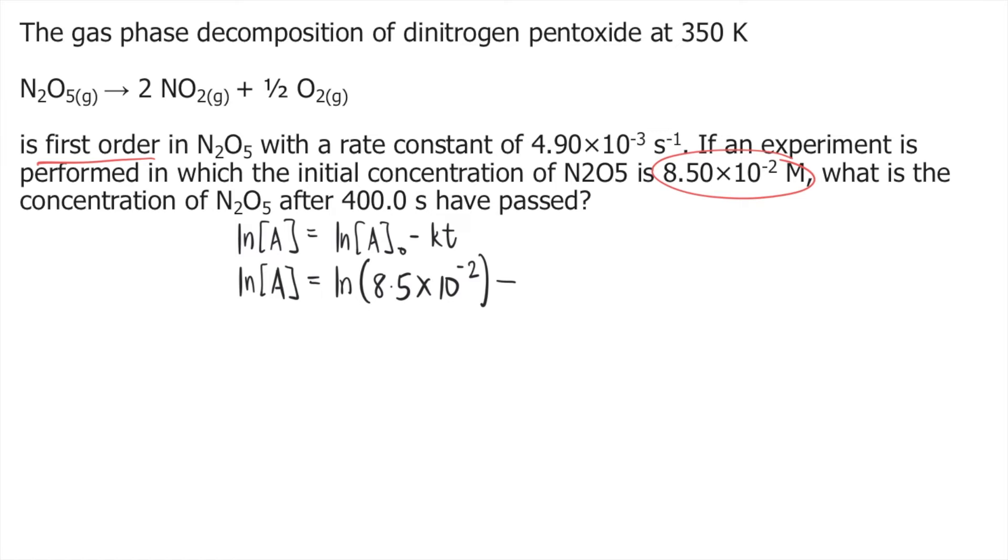Minus k is the rate constant, and we are given 4.90×10^-3. And t is the time, and we are given 400 seconds.